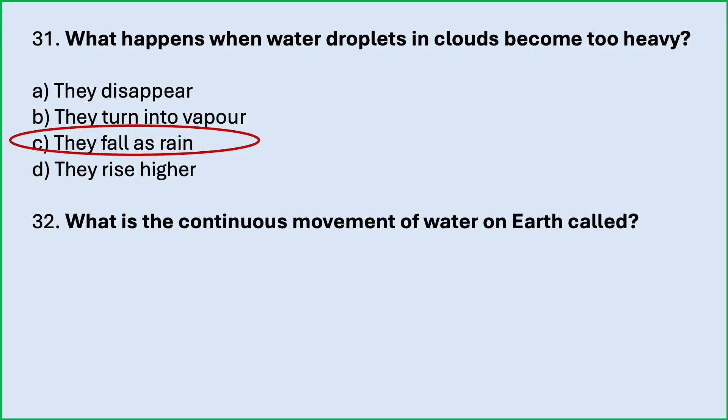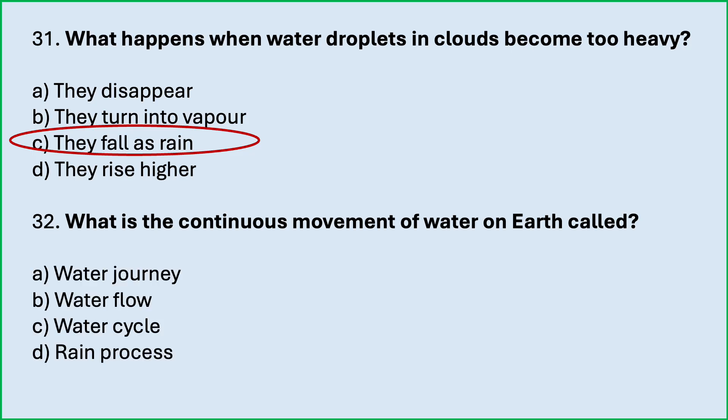What is the continuous movement of water on earth called? Options are: water journey, water flow, water cycle, rain process. Which is the correct answer? Water cycle.